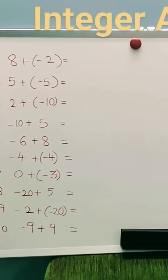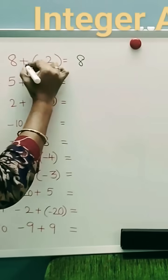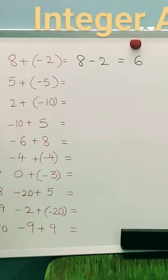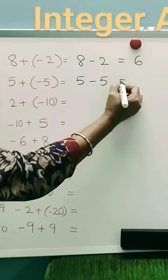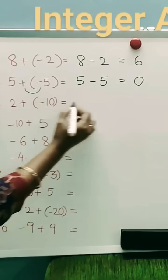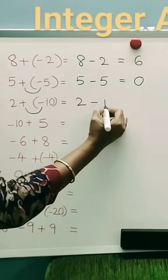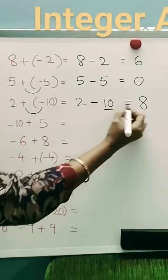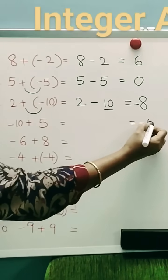Negative number addition. 8 plus minus 2: plus into minus is minus, so 6. 5 minus 5. Plus into minus is minus. 2 plus of minus 10: plus into minus is minus. Sign of the bigger number: minus 10 plus 5 is minus 5.